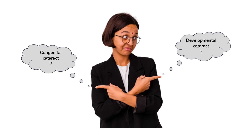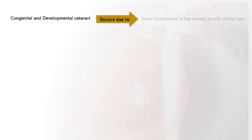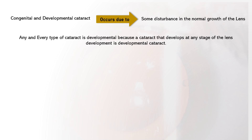Before getting into causes and types of congenital cataract, let's understand the difference between congenital and developmental cataract. Both occur due to some disturbance in the normal growth of the lens. Any and every type of cataract is developmental cataract, because a cataract that develops at any stage of lens development is called developmental cataract.